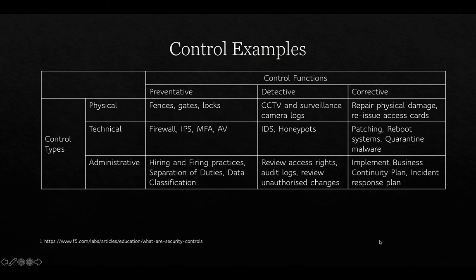Detective technical controls include intrusion detection systems (IDSs) and honeypots. In one of the labs we use a honeypot — a system put on your network to lure attackers, giving them something to roam around while logging their access, without risking any actual loss to the organization. Corrective technical controls may include patching, rebooting systems if there's malware in memory, and quarantining malware through antivirus and anti-malware software.